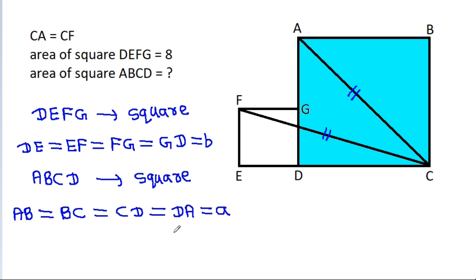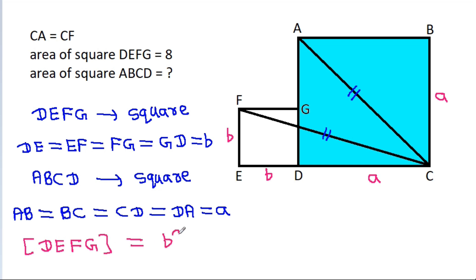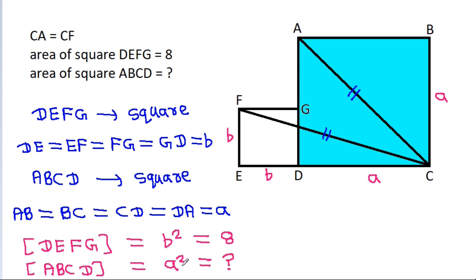Suppose the side of square DEFG is b and the side of square ABCD is a. So DE is b, EF is b, CD is a, and BC is a. The area of DEFG equals b² = 8, and the area of ABCD equals a². We have to find a².